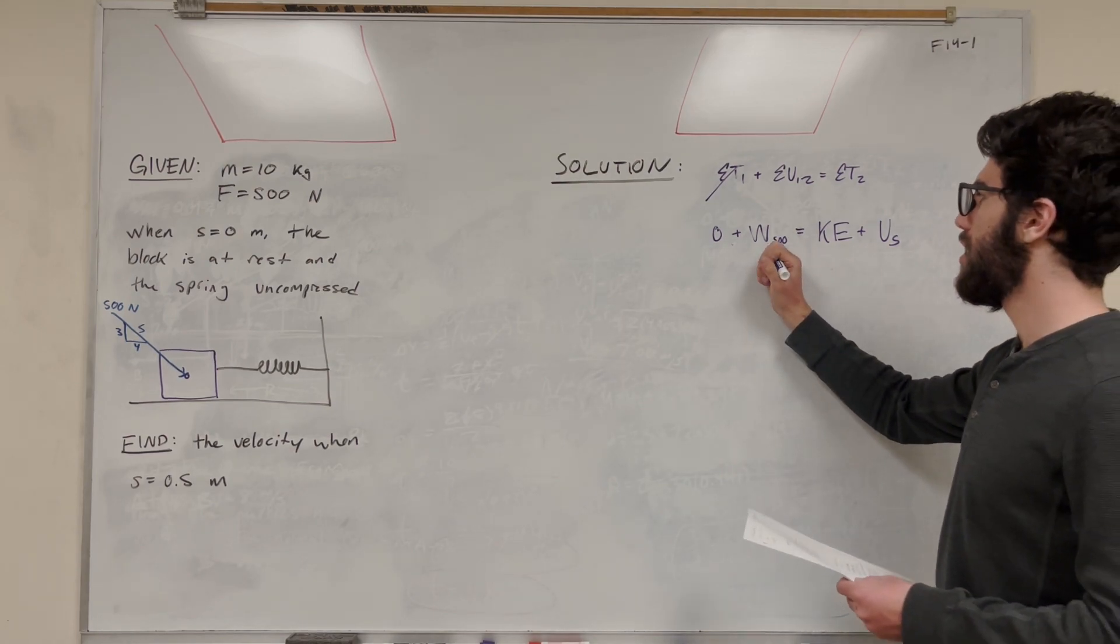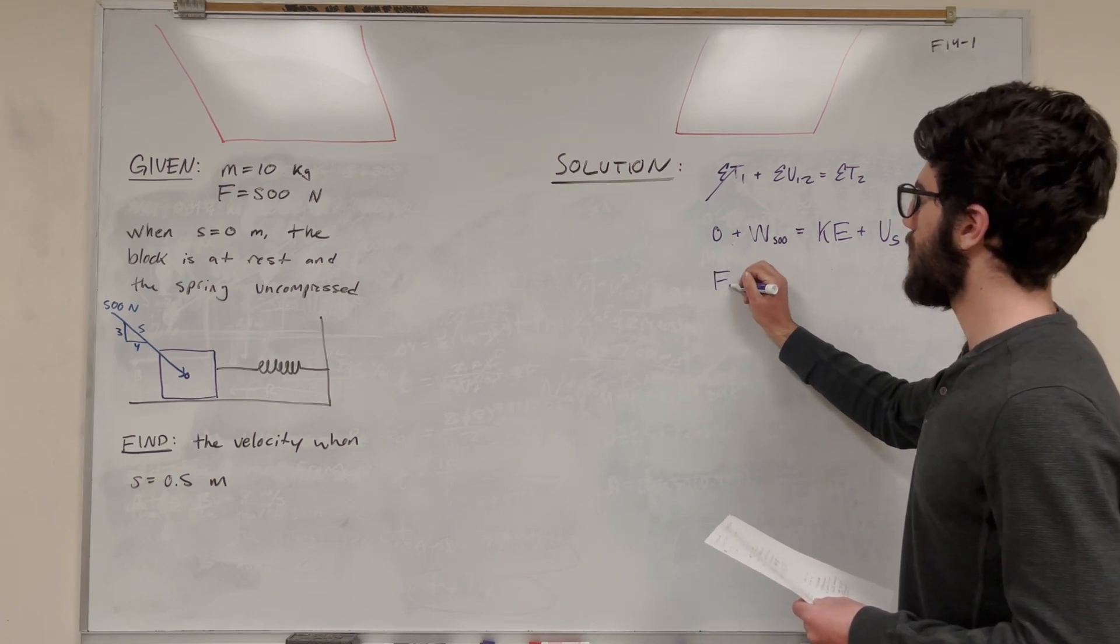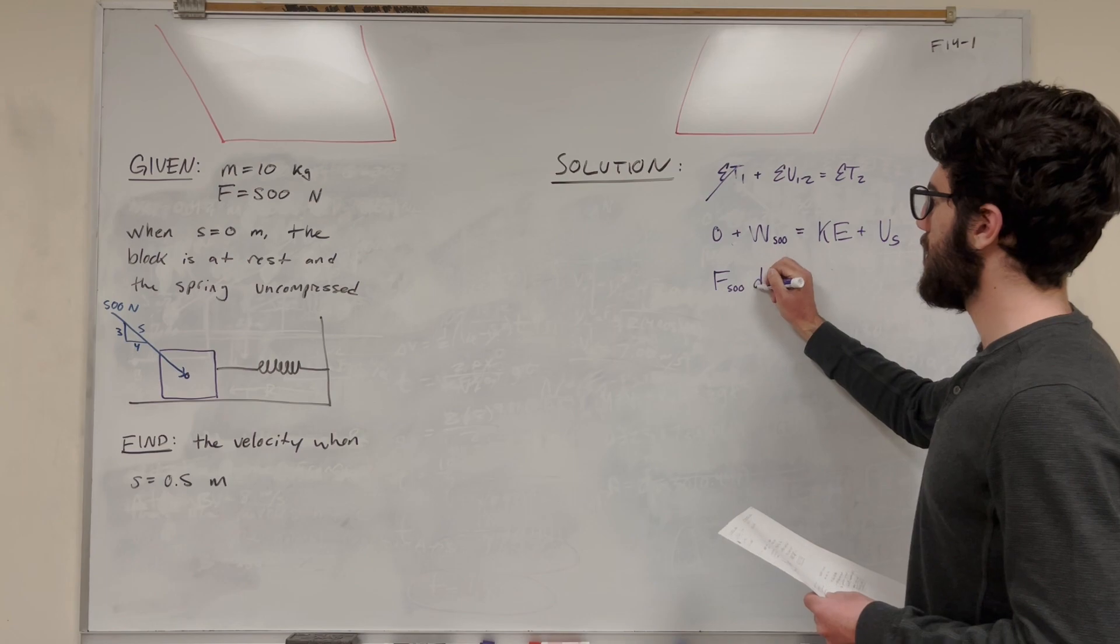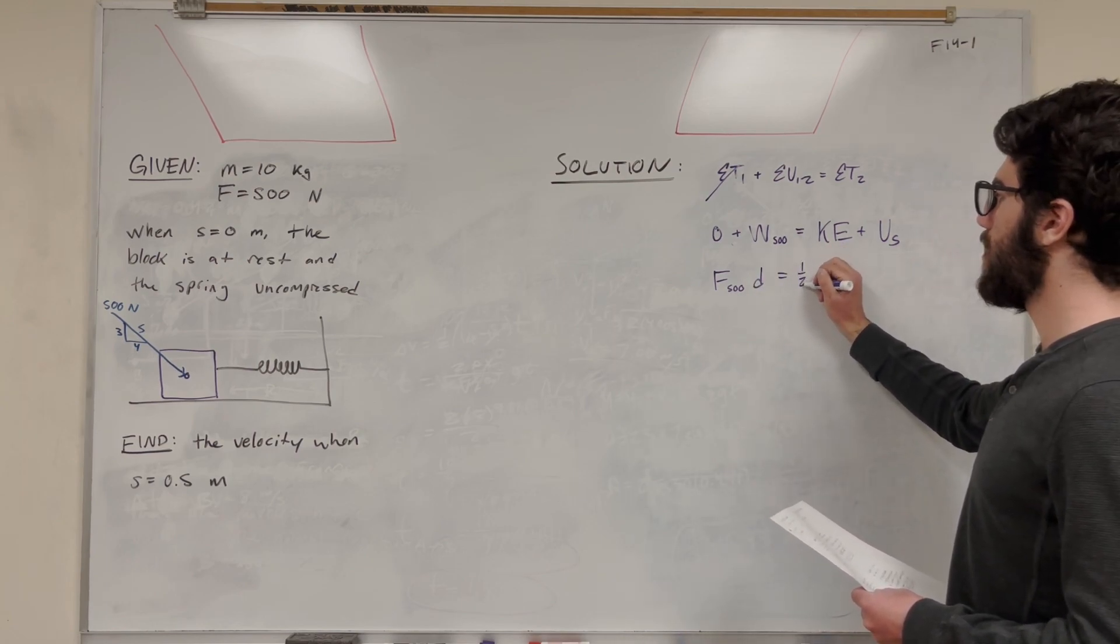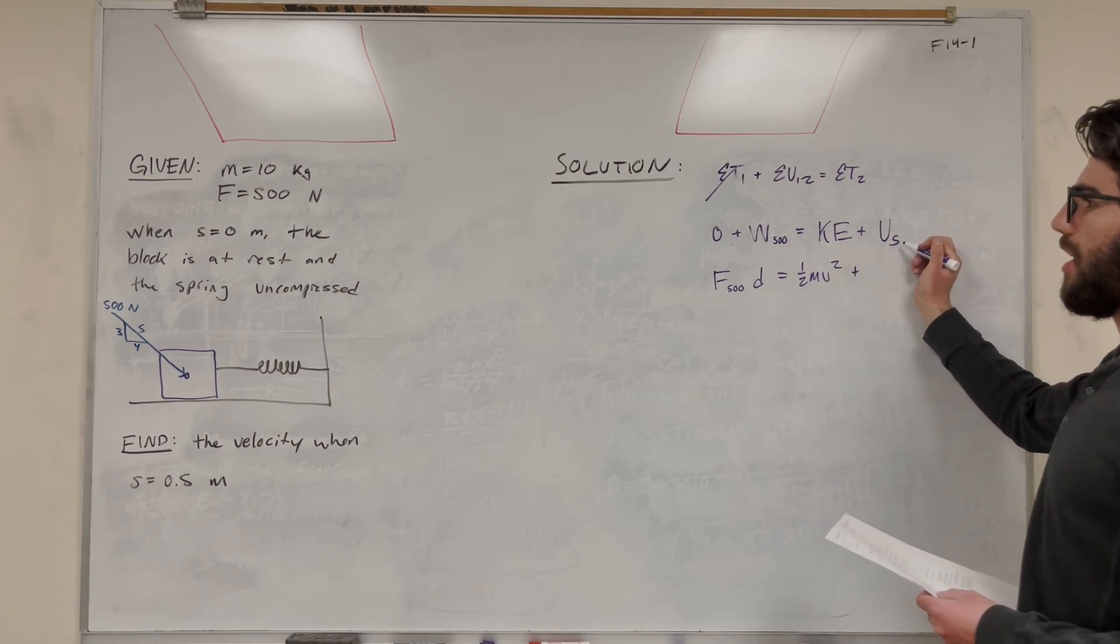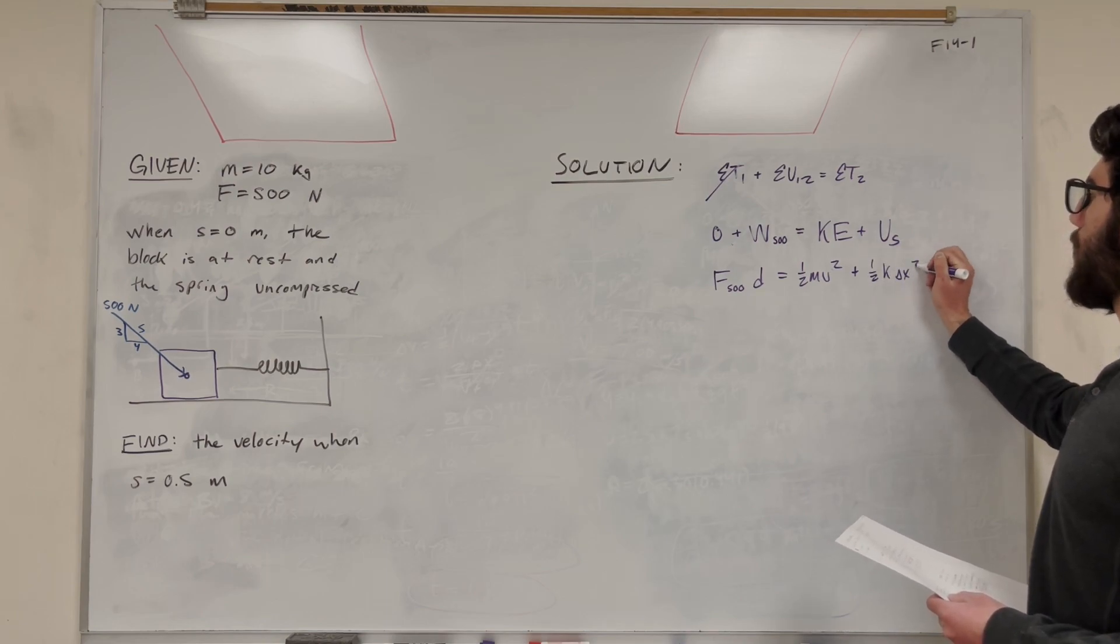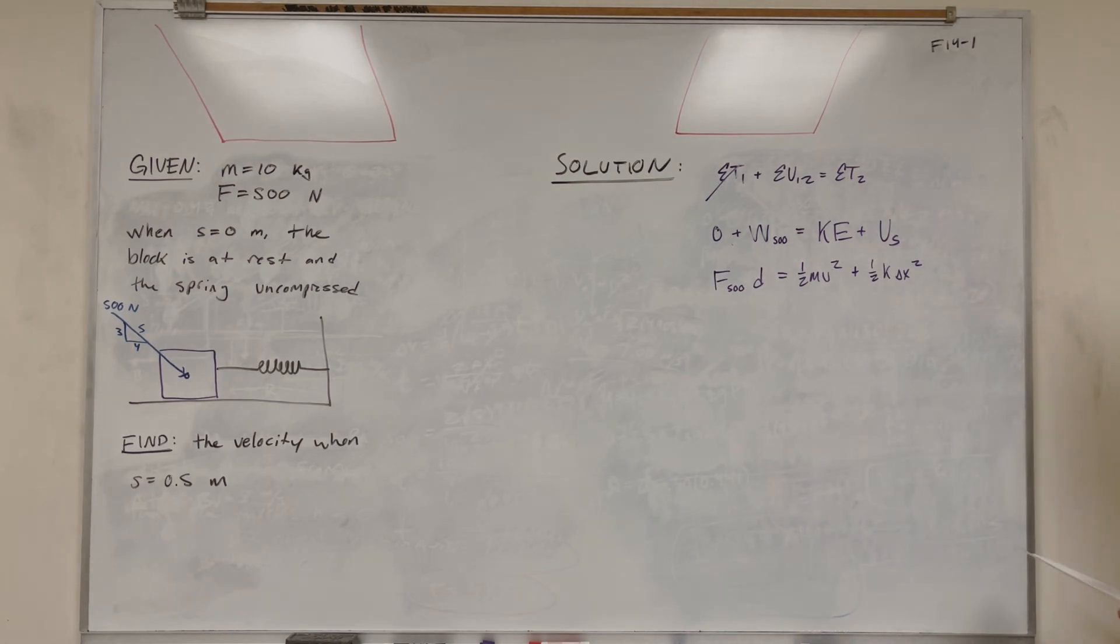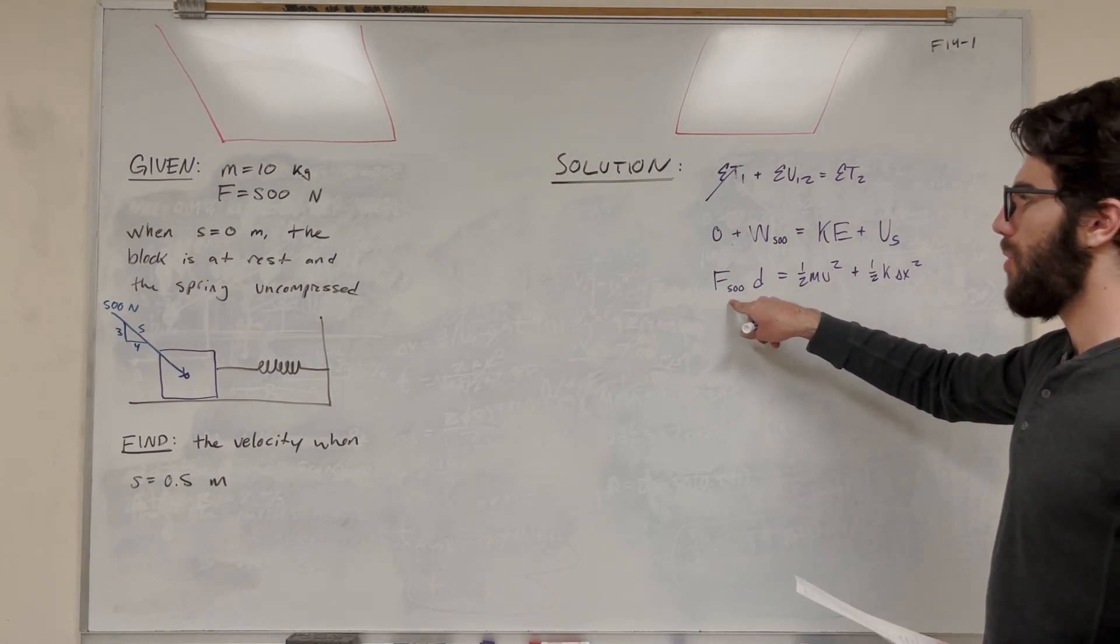Let's expand this equation. Work is equal to force times distance. So this is going to be that force of 500 times distance. And the kinetic energy is 1 half mass velocity squared. There's our velocity, that's what we're solving for. And then spring energy is 1 half k delta x squared. So that's our 0.5 meters right there. Same with this distance. Let's expand this even more.